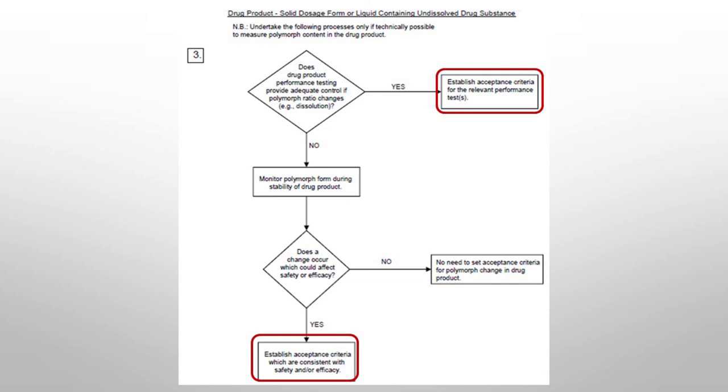If it doesn't stay the same, you'll end up having an acceptance criteria which sets specifications or limits as to how much is acceptable of an extraneous or different polymorphic form. You'll put in your analytical tests — which the high percentage of the time will be IR or Raman, or most often IR or X-ray powder diffraction — to control your product.